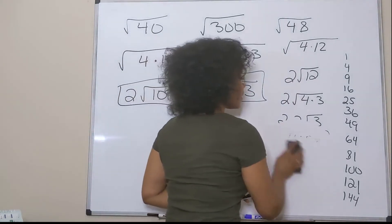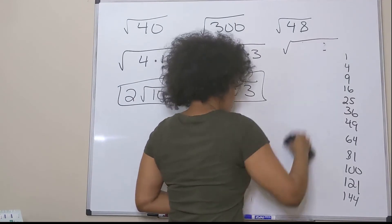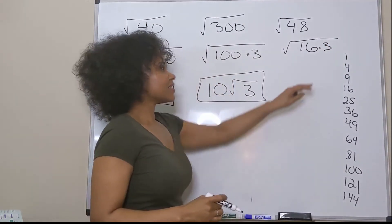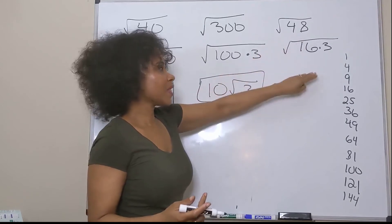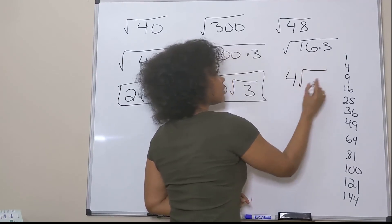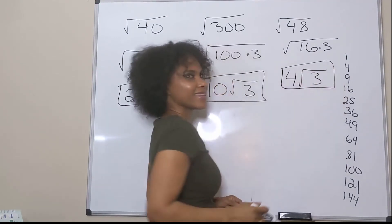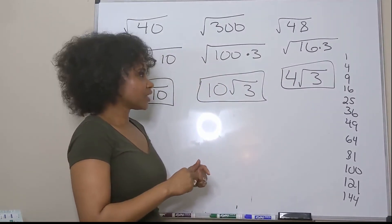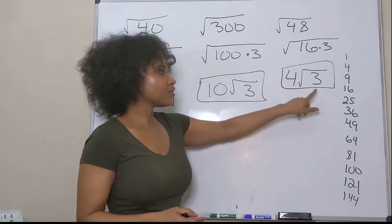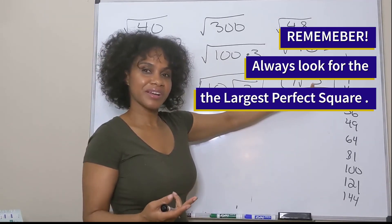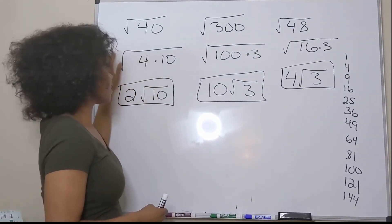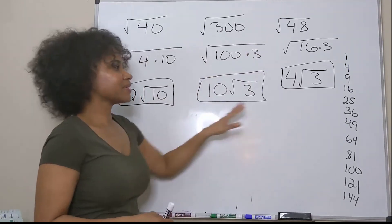Another factor pair we could have chosen for 48 is 16 times 3. The square root of 16 is 4, so I bring that out and leave my 3 under the radical, getting the same answer: 4 times the square root of 3. As you can see, there can be more than one perfect square factor of a number, so always check that the number under your radical has no remaining perfect square factors — that's how you confirm simplest radical form.